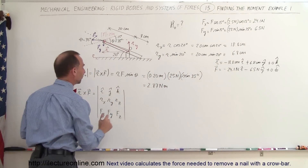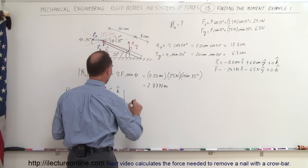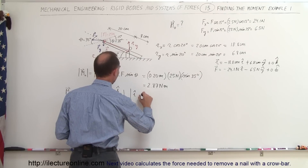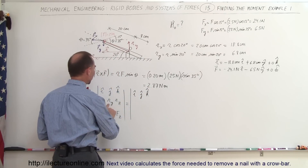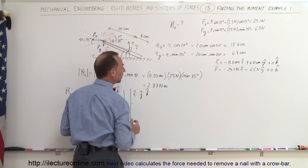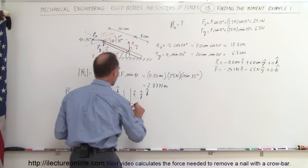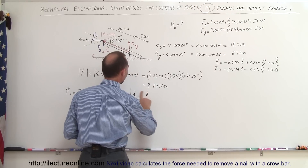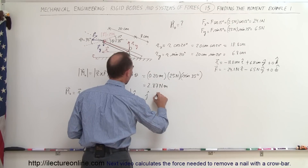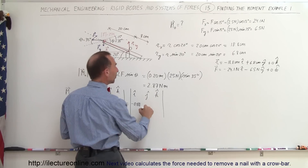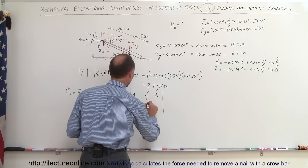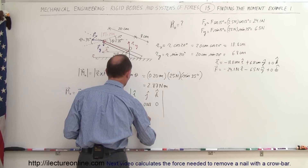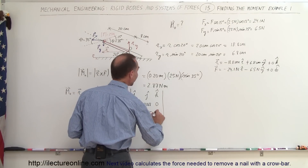Now we plug those into the determinant to find the vector product. Setting up the matrix with I, J, K in the first row; R_X = −0.188, R_Y = +0.068, R_Z = 0 in the second row; and F_X = −24.1, F_Y = −6.5, F_Z = 0 in the third row.